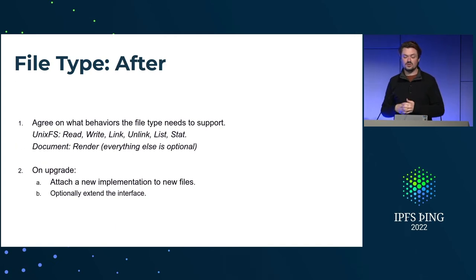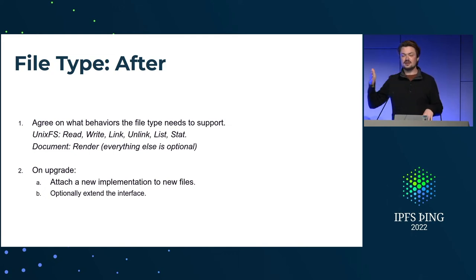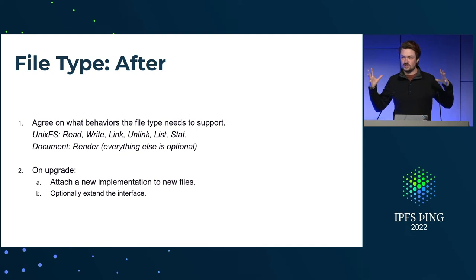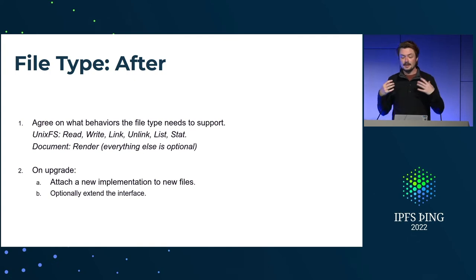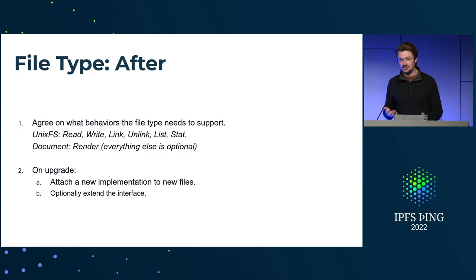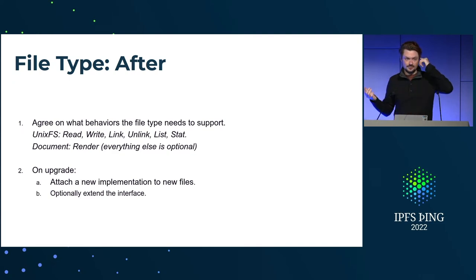After — once we can ship code — we just agree on what it needs to support and that's it. We agree on the interface: read, write, link, stat, whatever. These are the set of interfaces. As long as it supports this, great. It's not easy — we still have to figure out the interface we need to support. But once we've done that, we can tweak the file formats, tweak the data structures, optimize for a specific use case, do anything we need to do. On upgrade, if I want to switch to a new file system, I can just do that.